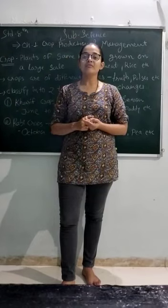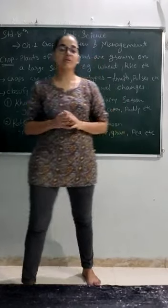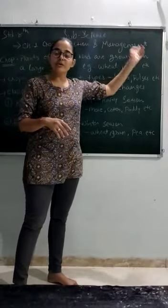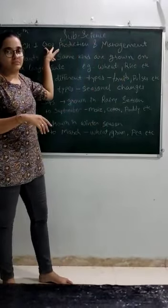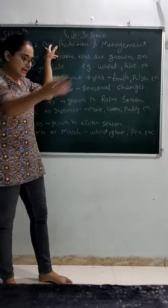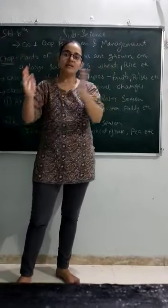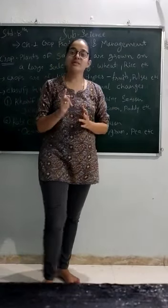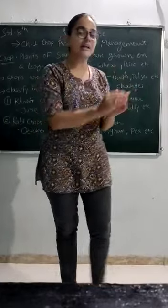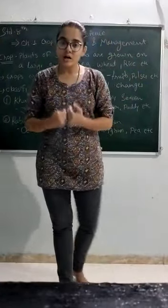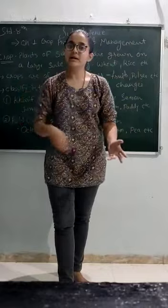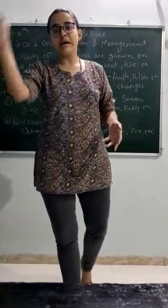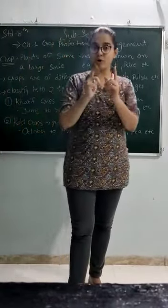And also, I gave some introductory part about chapter number one. That is crop production and management. We already discussed about what is crop. We know what it is - one land, where we grow all the plants, which are of same kind or same species.